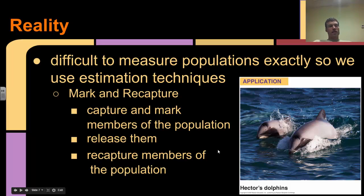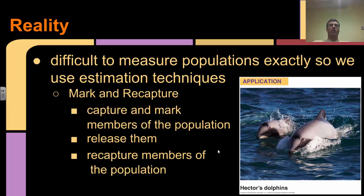The reality is that there are a lot of different things that can impact how populations grow. One thing that makes this science difficult is that it's hard to measure populations exactly in the wild - we don't know exactly how many organisms there are. So we use some estimation techniques. One of them, which we did in class, is called mark and recapture: we capture and mark members of the population, release them back, and then recapture members. Using those techniques we're able to come up with an estimate for how large the population is. This is used with things like dolphins or other animals we don't always see.